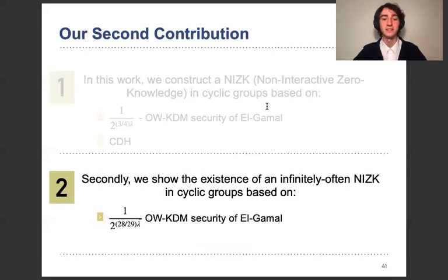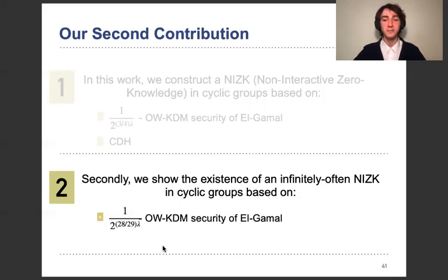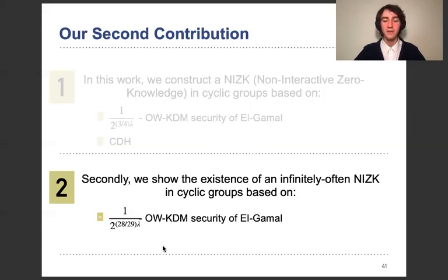Our second result is the existence of an infinitely often NIZK in cyclic groups based on the 2^(28/29 λ) one-way KDM security. What infinitely often means: unlike the more traditional, widely used asymptotic security, we can only guarantee that security holds for infinitely many parameters. If we are at a level of security and want to increase it, there might be gaps until we find the next one — we might need to increase the security parameter a lot, but we are guaranteed that at some point there will be one.